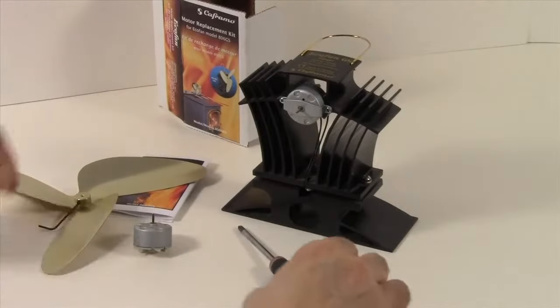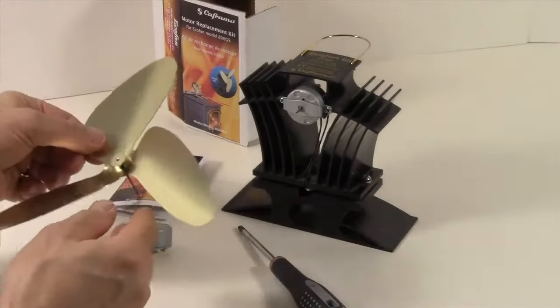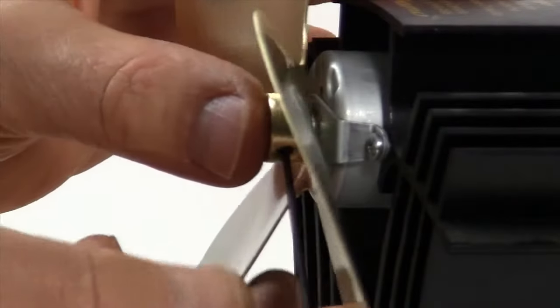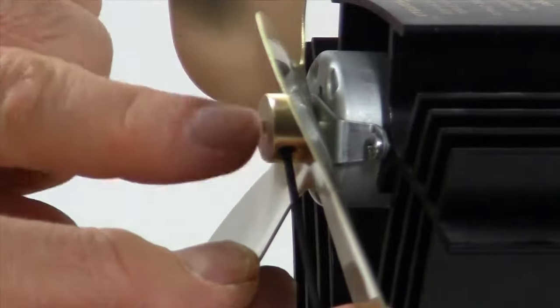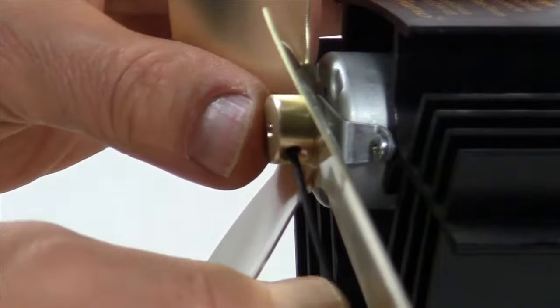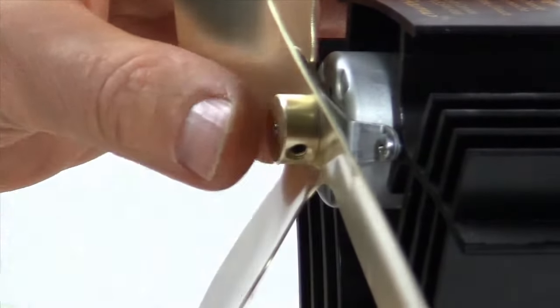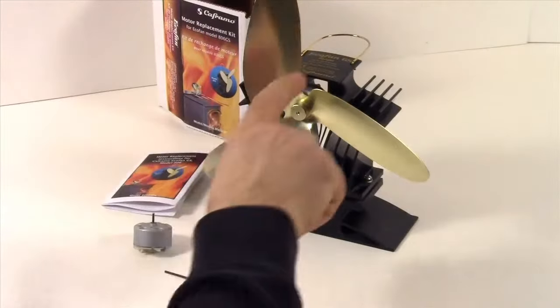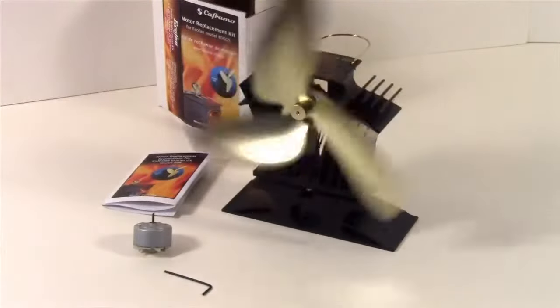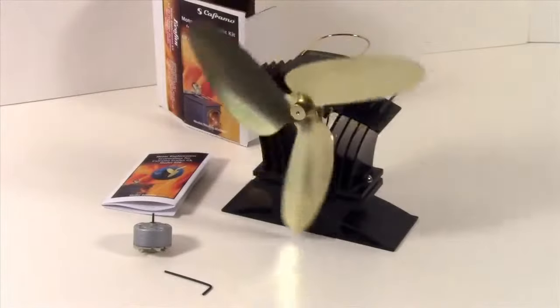And finally, we're going to replace the blade, putting it onto the shaft and ensuring that the shaft is flush with the front of the blade. And turn our screw clockwise to tighten. And that completes the motor replacement on an eco-fan model 806.